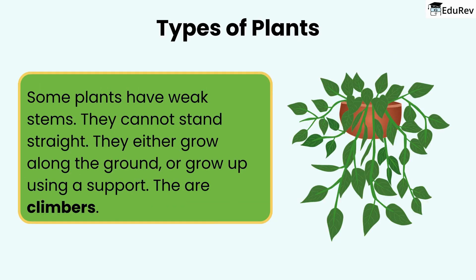Some plants have weak stems. They cannot stand straight. They either grow along the ground or grow up using support. These are called climbers. An example of a climber is the money plant.